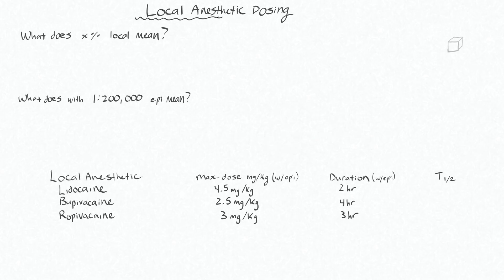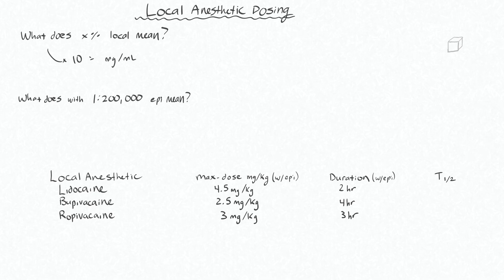We need to go over local anesthetic dosing. If you know this math cold, you can skip this and pick up in a minute or so. What does it mean when you say you have x percentage of local anesthetic? In essence, just multiply that by 10 and you'll end up with milligrams per mil of local anesthetic. The percentage means percent by weight.